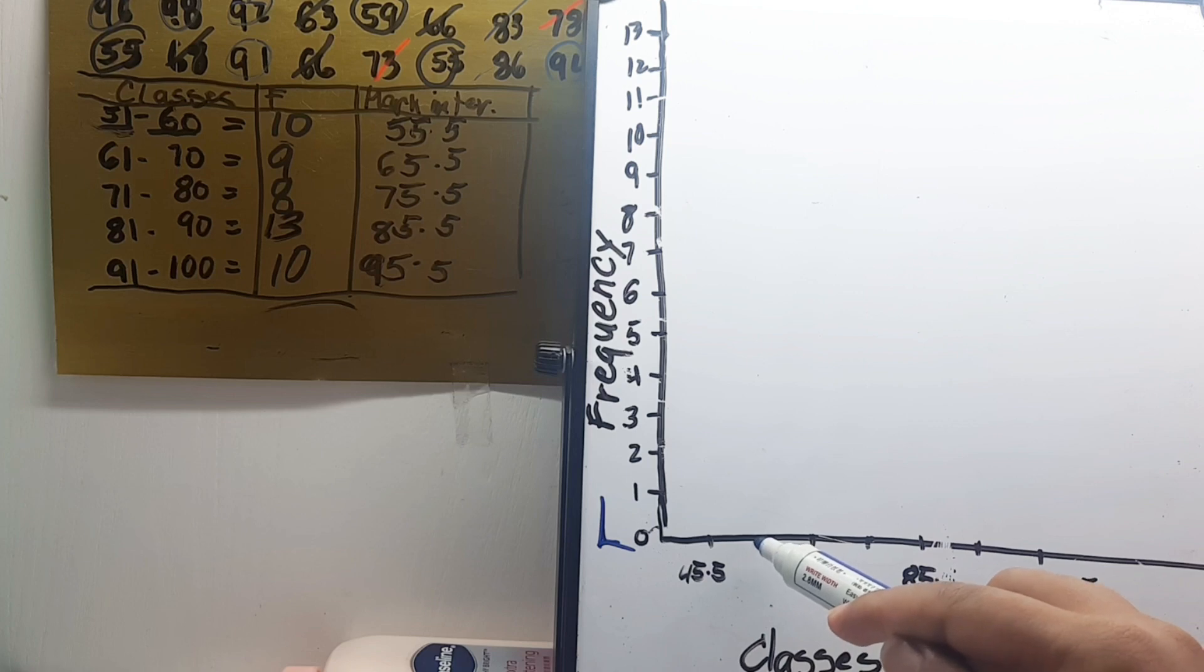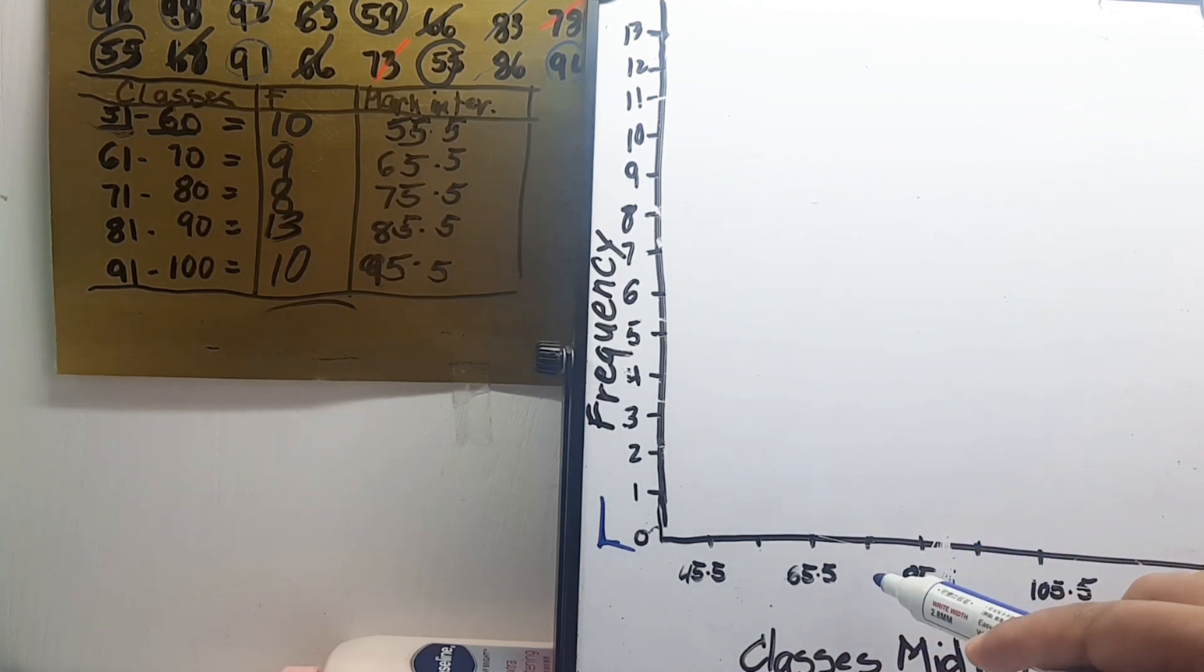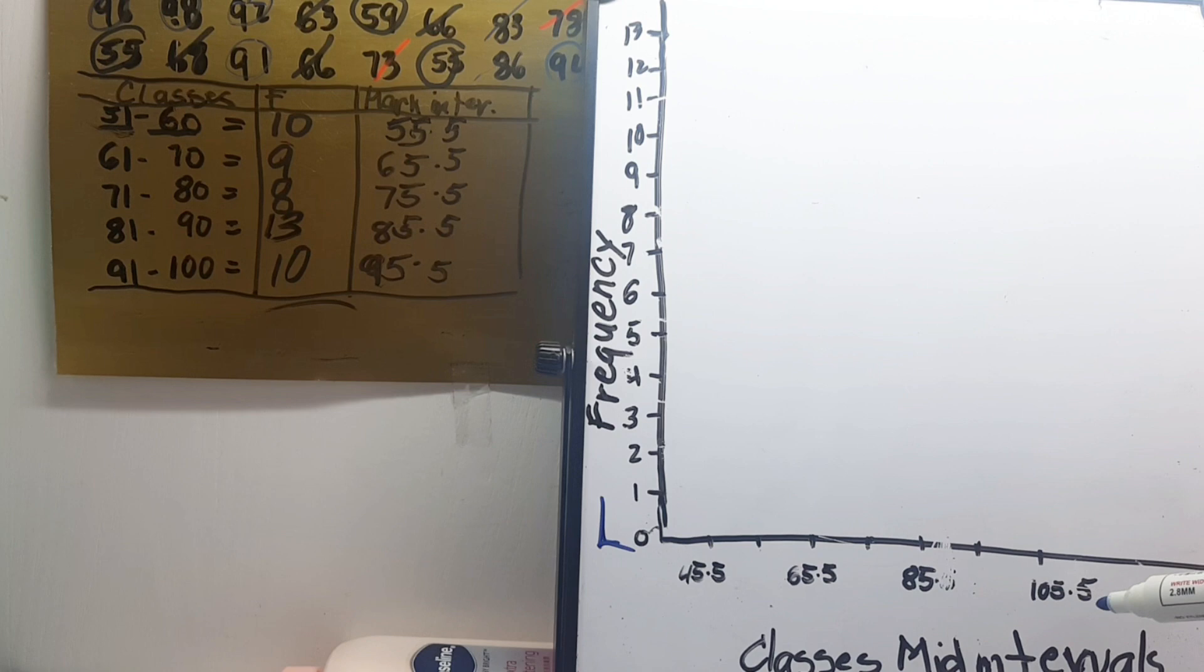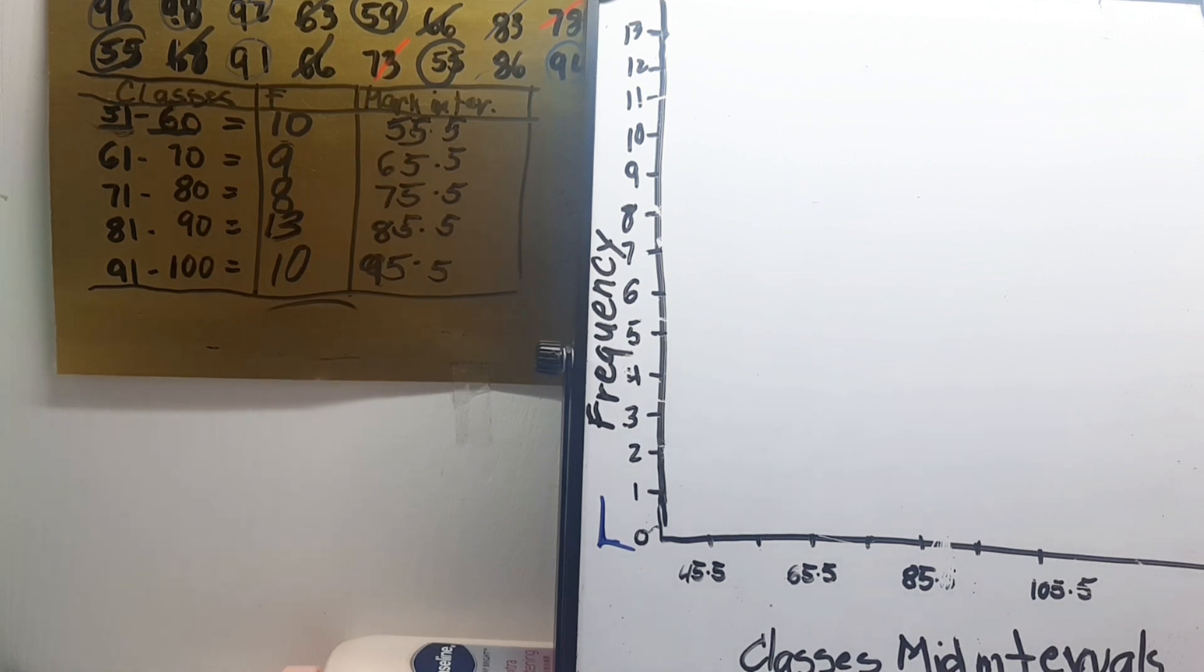And this will be our 55.5, 65.5, 75.5, 85.5, 95.5, 105.5. So that is how to make an axis of a polygon graph.